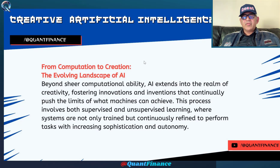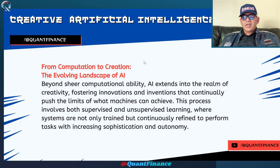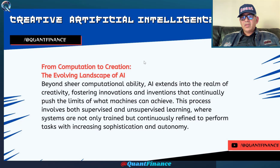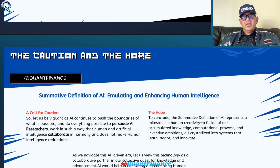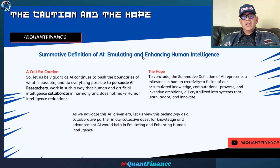Beyond sheer computational power, we see that machines are very fast. AI is now extending into the realms of creativity, fostering innovation and invention that continually pushes the limits of what machines can do and achieve. This is done through what is technically called supervised and unsupervised learning, where systems are not only trained but continuously refined to perform tasks with increased sophistication and autonomy. These machines are becoming autonomous — learning to make decisions themselves and identifying patterns that the human mind sometimes cannot. AI now has the creative power, the power of creation.